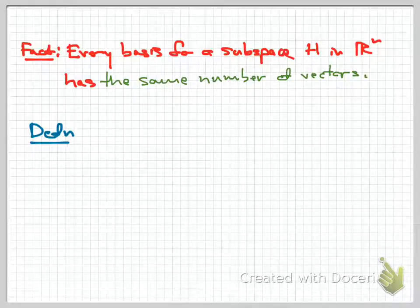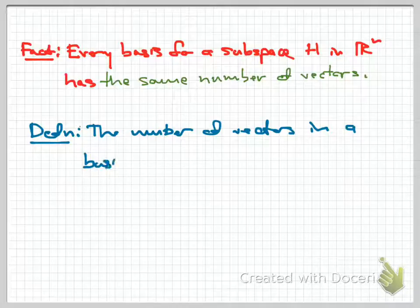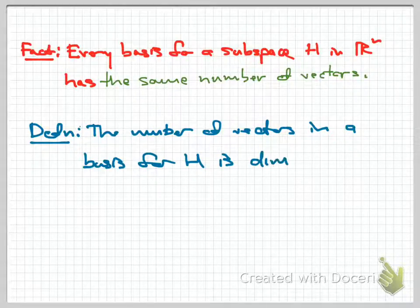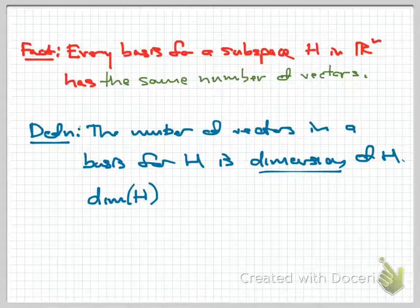Since the number of vectors in a basis for a subspace is always the same, we give that number a name. The number of vectors in a basis for H is called the dimension of H, abbreviated dim(H). The dimension is invariant—it doesn't matter what the basis looks like, it will always have the same number of elements. As a special case, the dimension of the empty set is defined to be zero.